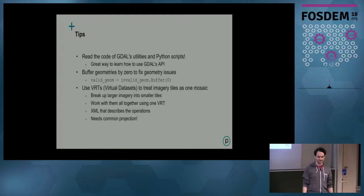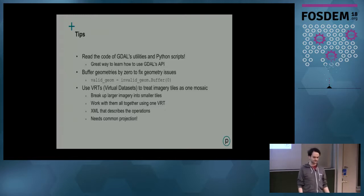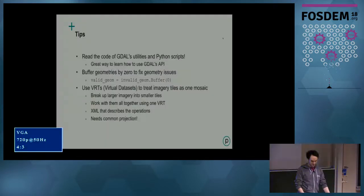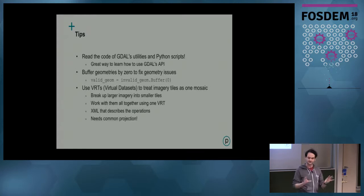There's also VRTs — Virtual Data Sets. You can basically treat a whole bunch of imagery tiles as one big image. You can also take a big image, chunk it up into smaller files, and join it all back together in a VRT, which just references all the images and where they'd be if they were one raster. VRTs are XML files that describe all the operations. They do need everything to be in one common projection, so keep that in mind.